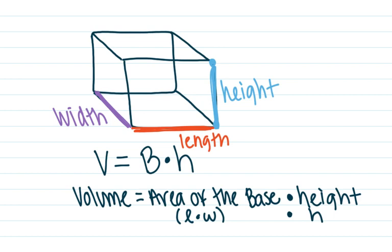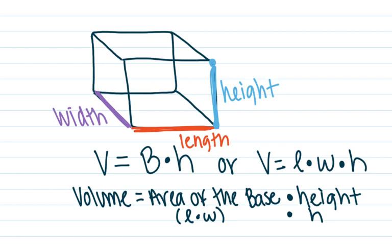Our terminology for volume changes a little because we have to find the area of the base. The area of a rectangle is base times height, but here we revert to the words length times width. So another way to think of the volume formula is: Volume equals length times width times height.